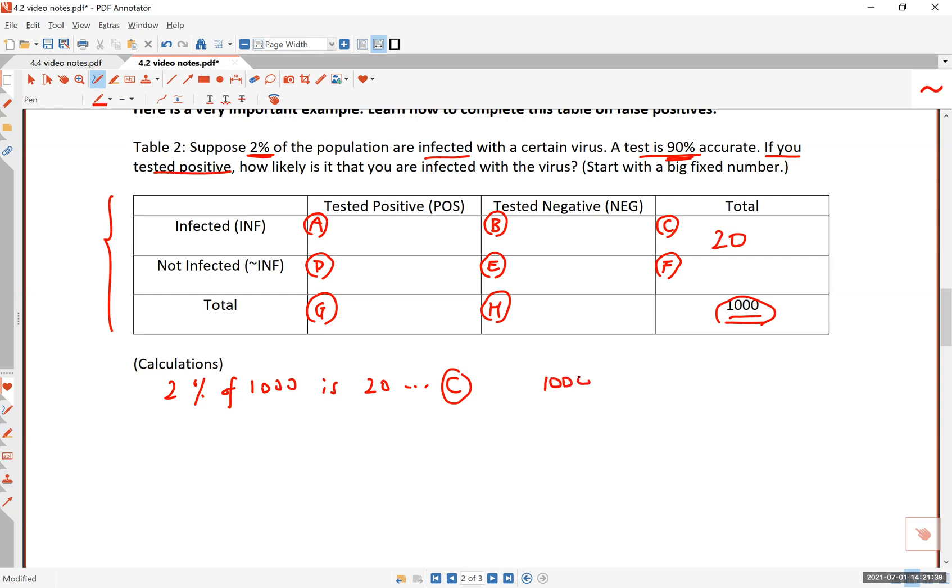Now you can do 1000 minus 20, which is 980, and this is box F because that's the number of people who are actually not infected with this virus. You can also consider this to be the 98% of the thousand people.